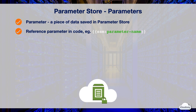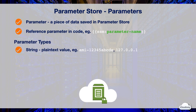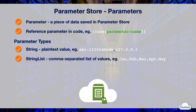Parameter Store supports three types of parameters: String, StringList, and SecureString. String parameters consist of a block of plain text — for example, you can store an Amazon EC2 AMI ID or an IP address as a String parameter. StringList parameters contain a comma-separated list of values — for example, you can store a list of software license keys as a StringList parameter.